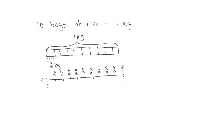Now we can also represent these tenths in decimal form. We read the decimal the same way as the fraction. We write the decimal as a zero in the ones place to show there's no whole number part, a dot called the decimal point that marks the beginning of the fractional part, and a one to show one tenth. We read this as one tenth.